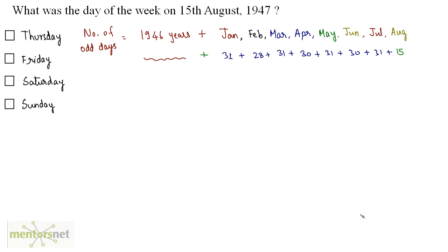Now the number of days of January, February, March, April are written and the number of days for the month of August will be 15 because we are taking the date as 15th August. The complete days of the month: January has 31, February has 28 because 1947 is not a leap year, March 31, April 30 and so on. Then we'll first calculate what is the number of odd years for 1946 years.